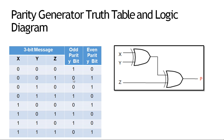000 है, तो odd parity bit जो होगी वो odd number of ones maintain करेगी इसलिए। 010 में मैंने एक 0 add किया तो वो odd parity होगी क्योंकि एक ही one बचा है पूरे message में, और एक one और add कर दिया तो वो होगी even parity।